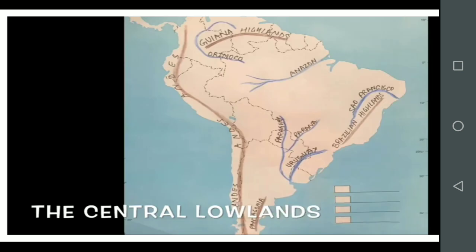The central lowlands, as the name suggests, are located between the Andes in the west and the eastern highlands. The plains are formed by the Amazon, Orinoco, Parana, Paraguay and Uruguay rivers. The Parana, Paraguay and Uruguay collectively form the La Plata river system.